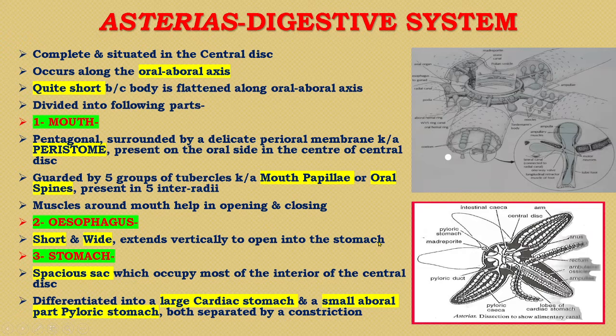The stomach is a spacious sac which occupies most of the interior of the central disk. The stomach is differentiated into a large cardiac stomach and a small aboral part called the pyloric stomach. These two stomachs are separated by a constriction.